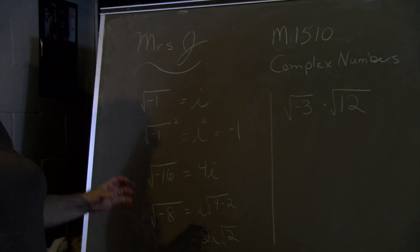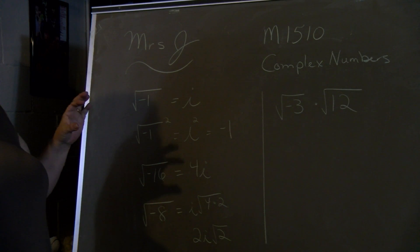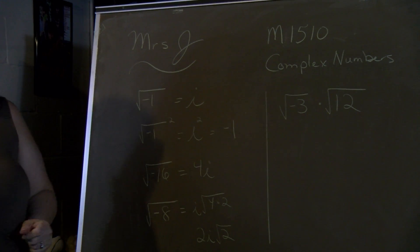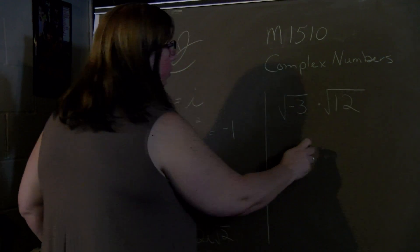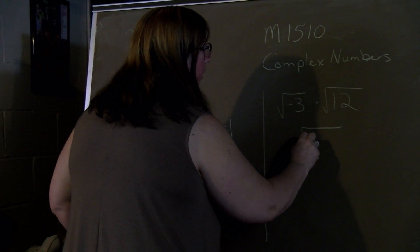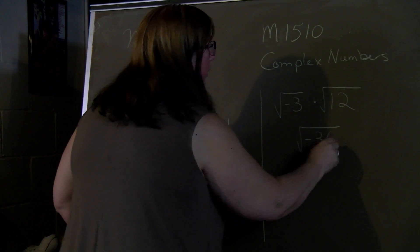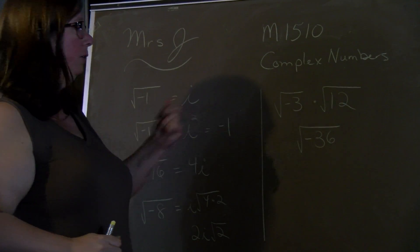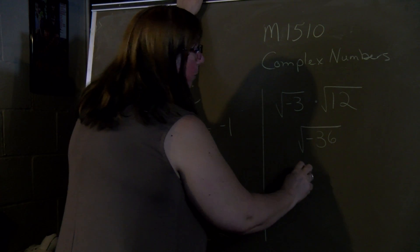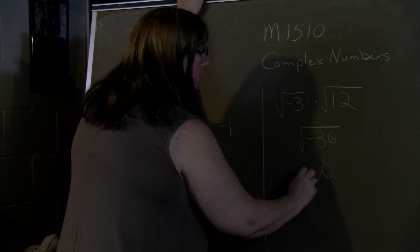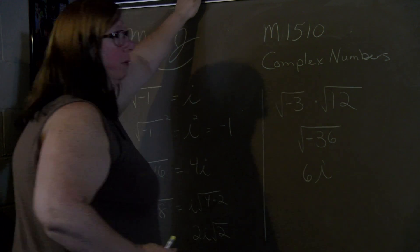When you're multiplying, as long as the radicals are the same, you can just multiply what's inside of them. So if we take 3 times 12, we get negative 36. And then you can reduce it. So it was easier to multiply it first and then reduce. And we get negative becomes i, square root of 36 is 6i.